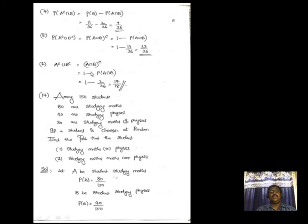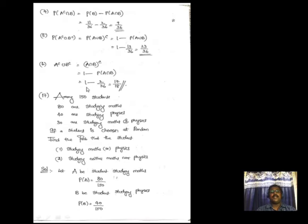For P(A′ ∪ B′): by De Morgan's law, this equals P((A ∩ B)′) = 1 − P(A ∩ B) = 1 − 2/36 = 34/36. This completes the solution for the dice problem.